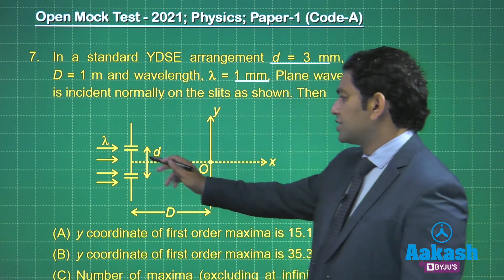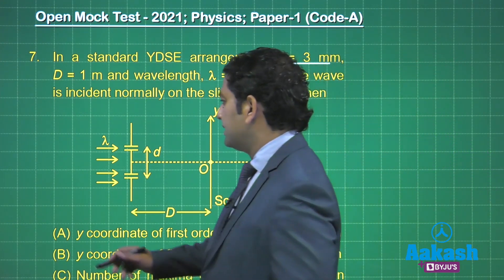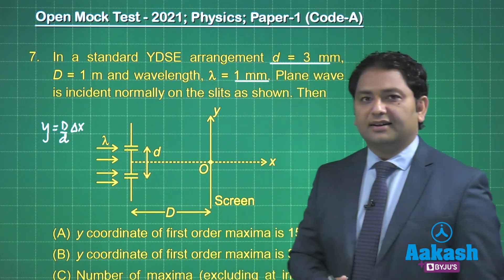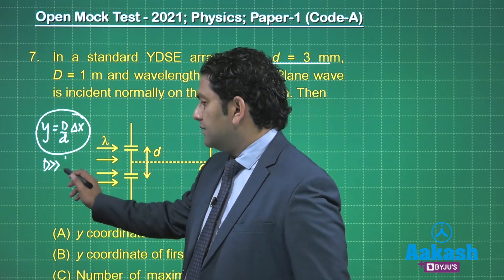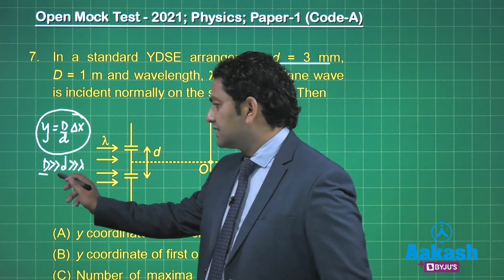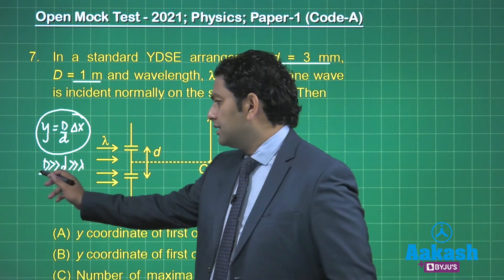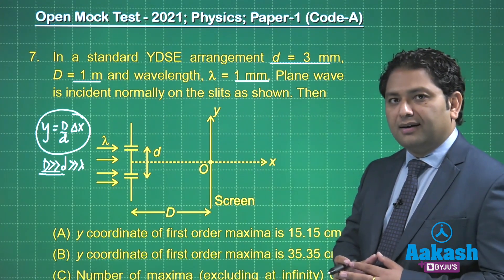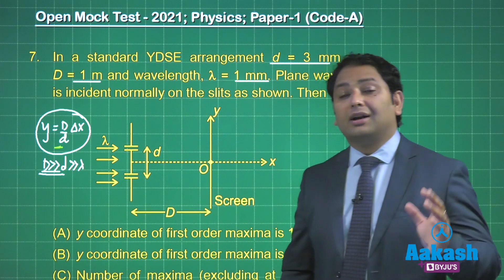Lambda is 1 millimeter and the separation between the slits is 3 millimeter. The expression of YDSE is y equals capital D by small d into delta x. This expression comes with a big condition: capital D must be much greater than small d, which must be much greater than lambda. The first condition is satisfied — D is 1 meter and d is 3 millimeter — but small d is not much greater than lambda. So we are not allowed to use this equation.